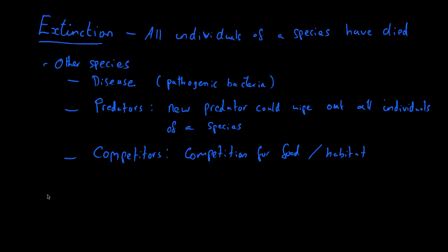Things which are not other organisms but can also lead to extinction include natural disasters — and that's one of the theories for how the dinosaurs went extinct. Natural disasters can lead to widespread death in one particular place. If you had a particularly bad earthquake or a volcanic eruption which completely wiped out one ecosystem, and that ecosystem is the only place where a certain species can be found, that natural disaster could cause that species to become extinct.